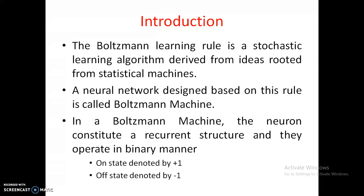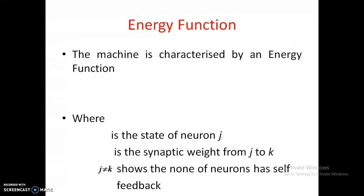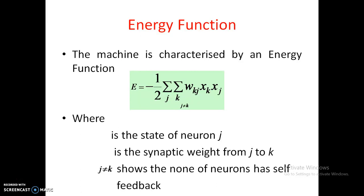The machine is characterized by an energy function that we need to minimize. The energy function is: capital E equals minus one-half times sigma-j sigma-k of w_kj times x_k times x_j, where j is not equal to k. This means there is a connection from the jth neuron to the kth neuron, and w_kj is the synaptic weight.